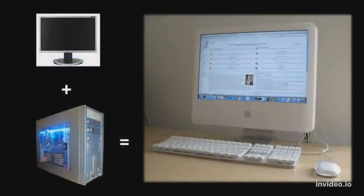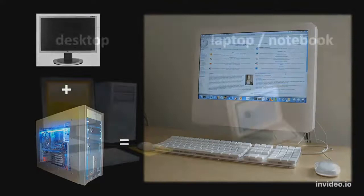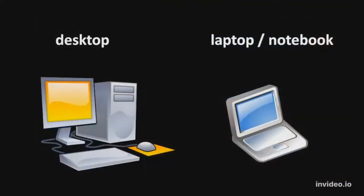Confusingly, however, there are examples where a monitor and a computer are housed together in one unit. For example, Apple sells a line of computers called iMacs. And also, of course, a laptop is a system where the monitor and the computer have been housed together in one physical unit.